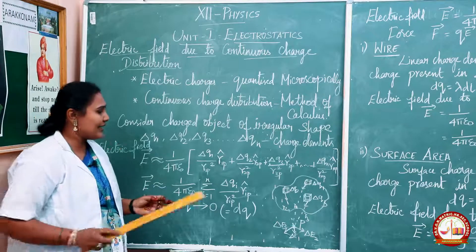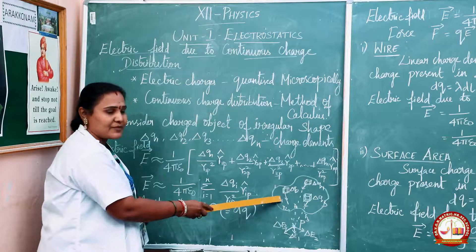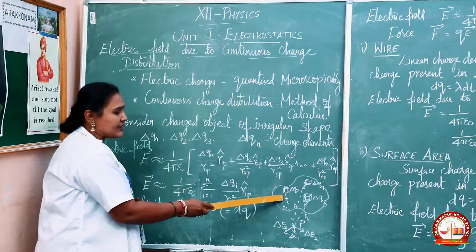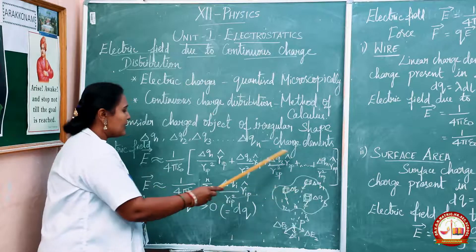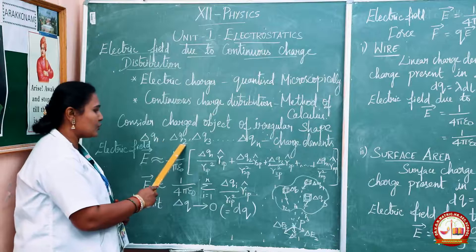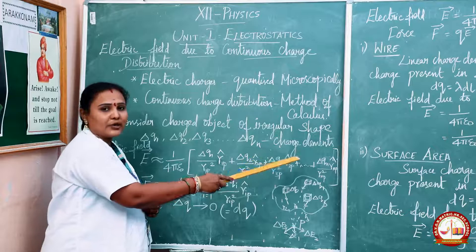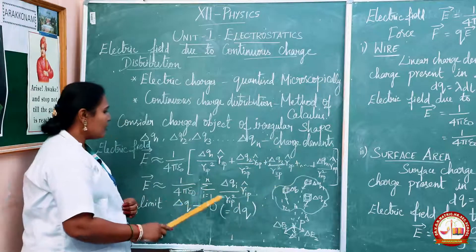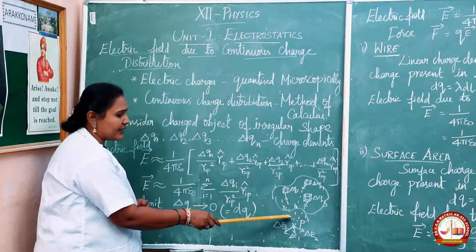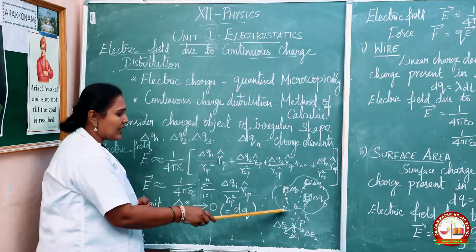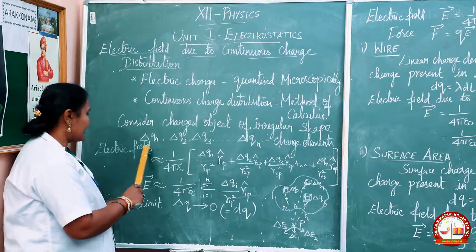We are considering an irregular shape charged object. We can consider n number of charges, and the charge elements are denoted by ΔQ1, ΔQ2, ΔQ3, etc., up to ΔQn for the n number of charges. From the point P to the charge element, it is separated by a corresponding distance R1, R2 and R3.